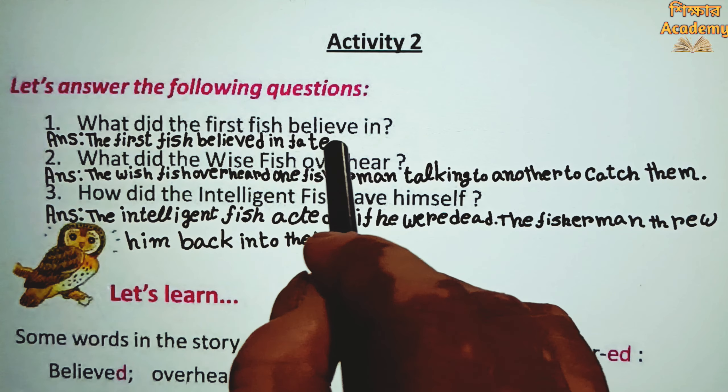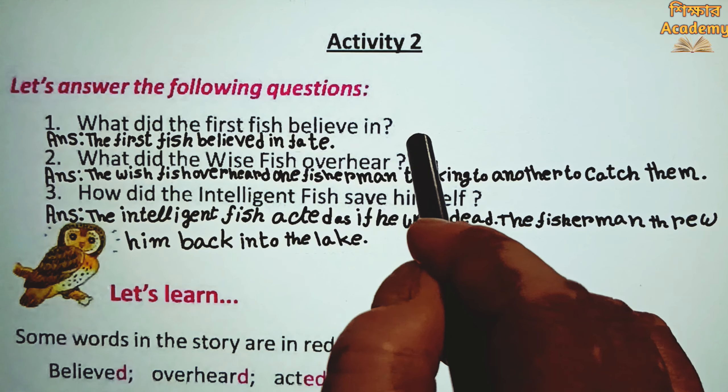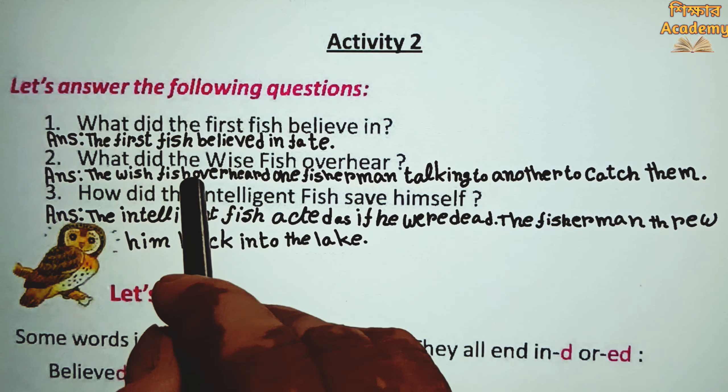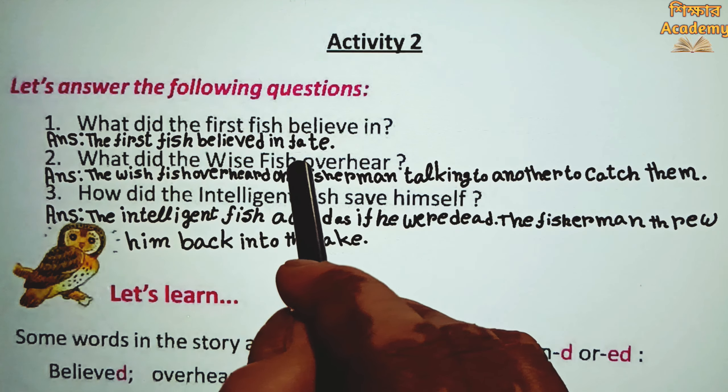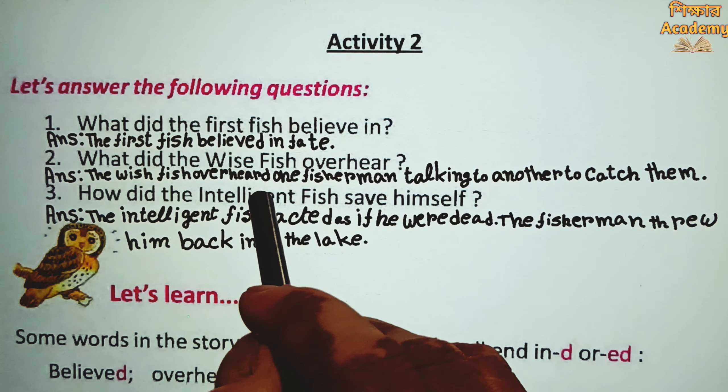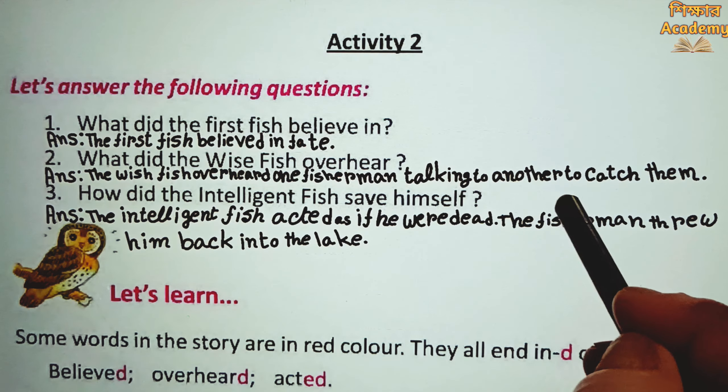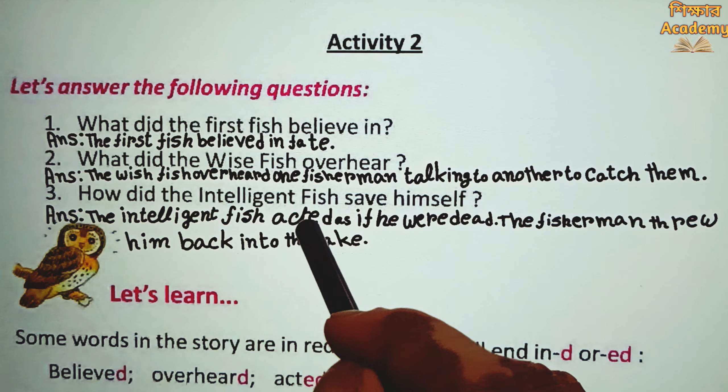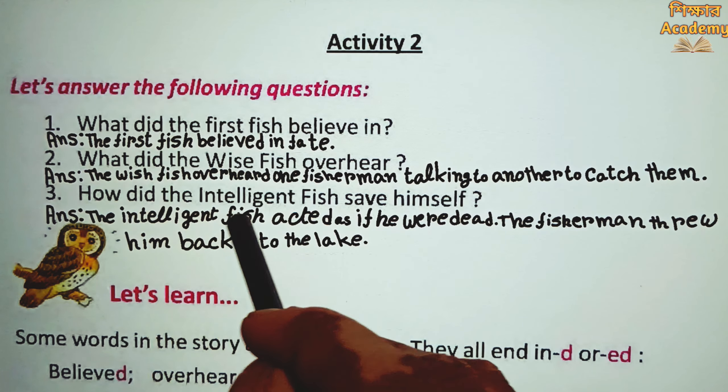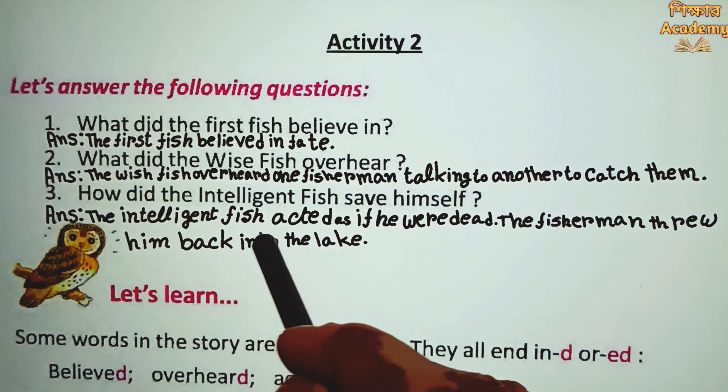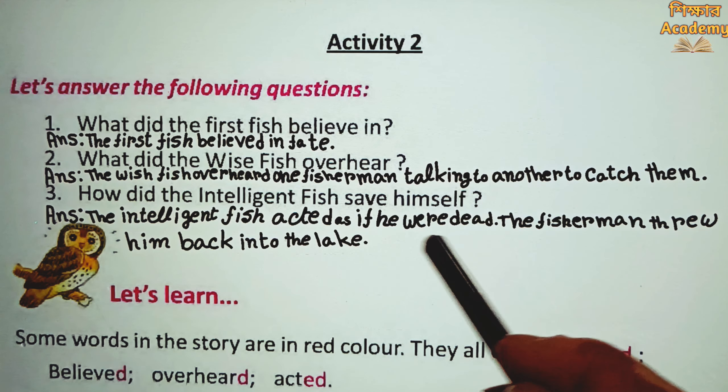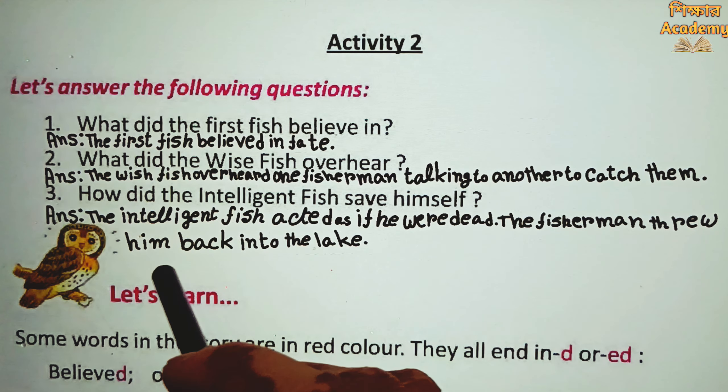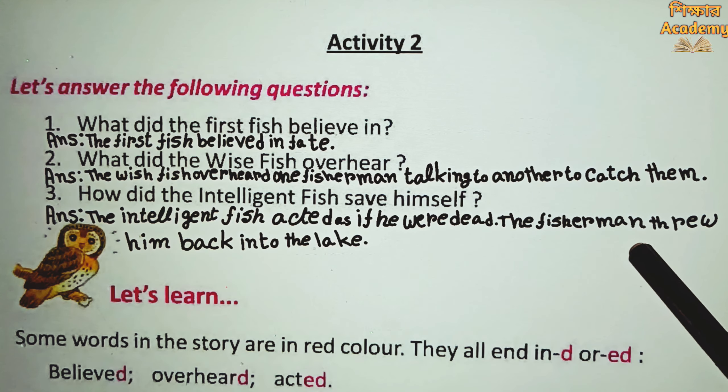The first fish believed in fate. The wise fish overheard one fisherman talking to another to catch them. How did the intelligent fish save himself? The intelligent fish acted as if he was dead. The fisherman threw him back into the lake.